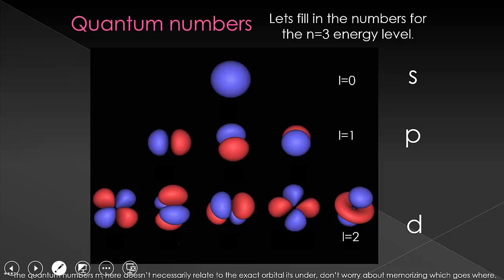For each L value, there are possible M sub L numbers. For L equals zero, the S orbital is allowed to have an M sub L value of zero, which means there is only one orbital. For L equals one, we're allowed to have M sub L equals negative one, zero, and one, meaning we have three different P orbitals. For L equals two, we have M sub L values of plus or minus two, plus or minus one, and zero, giving us five different allowed values for the D orbitals. You should check out the drawings of the F orbitals in your book — they're kind of interesting and cool looking.